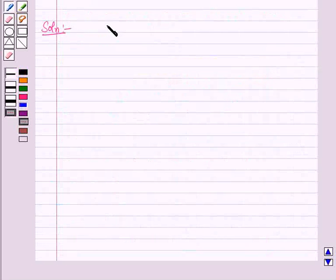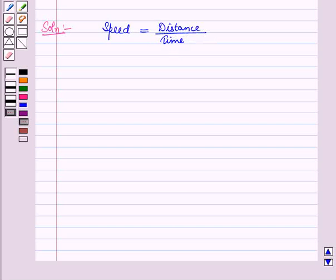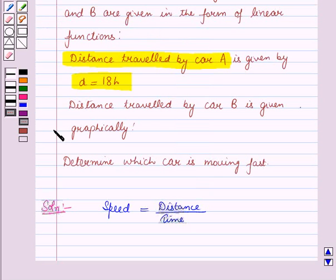Now we know that speed is equal to distance travelled upon time taken, or you can say speed is distance travelled per hour. So speed is given by slope of the two linear functions. Here we will compare the two given linear functions with respect to their slopes.